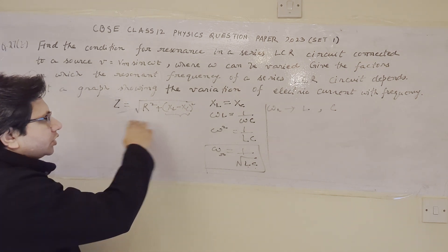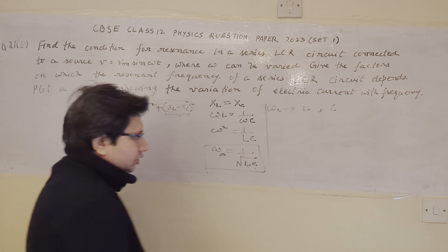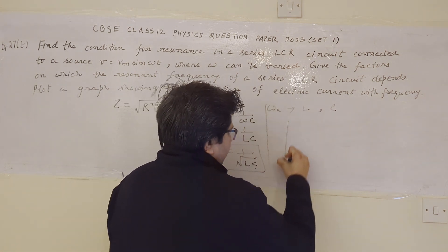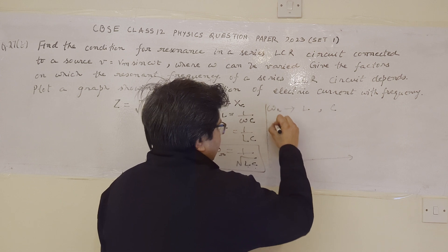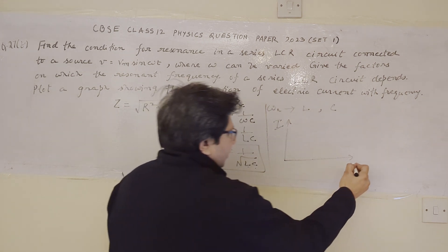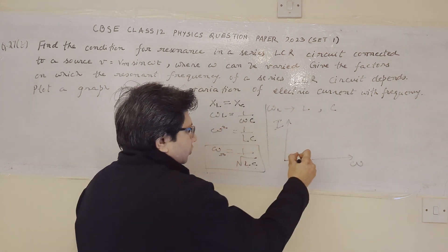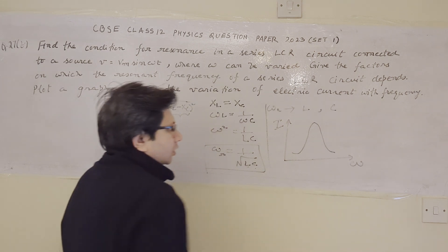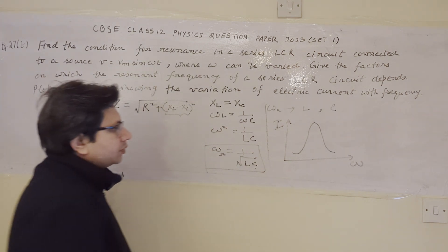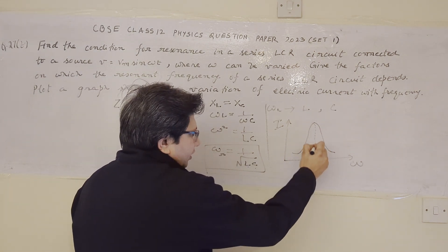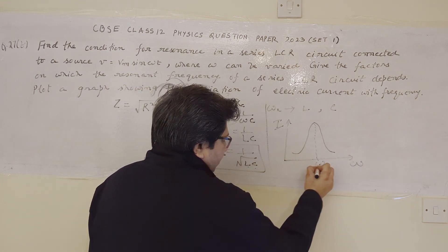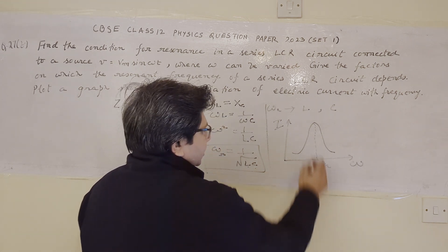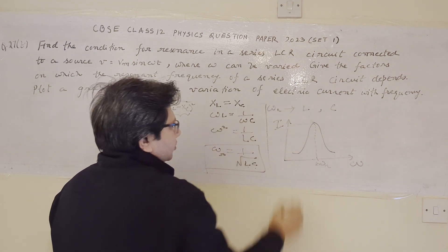And we have to plot a graph between the current and the frequency in the next part. So, if you plot the graph between I and omega, Y axis is I, X axis is omega. We get this kind of a curve. This is the curve which we obtain. The peak is obtained at the frequency omega R which is known as the resonant frequency. So, at the resonant frequency current is maximum here.